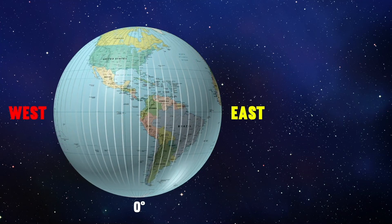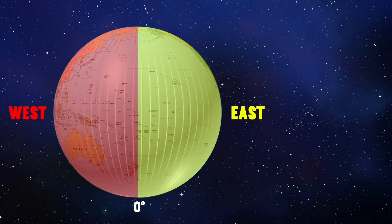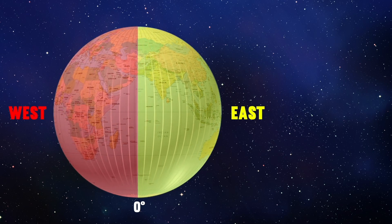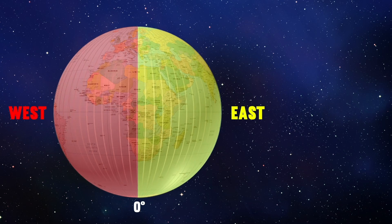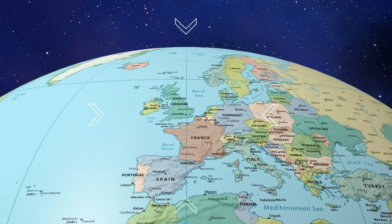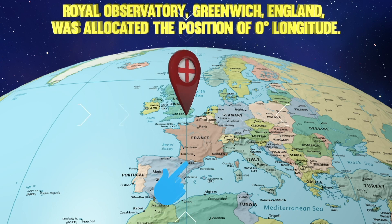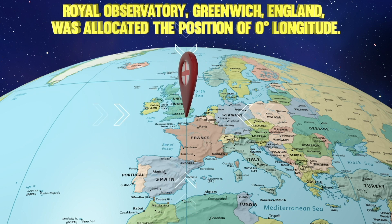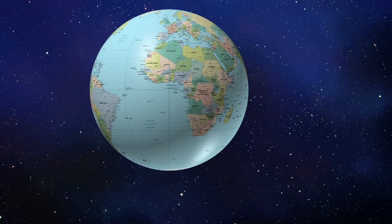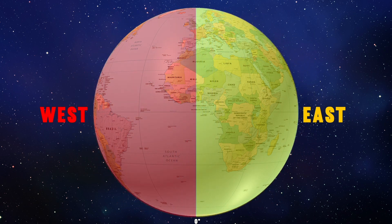Now we have to know what longitude is. Longitudes are vertical imaginary lines running from pole to pole, and longitude is a geographic coordinate that specifies the east-west position of a point on the earth's surface. Zero degree longitude is called the prime meridian, also called the Greenwich Meridian because it passes through the Royal Observatory in Greenwich, England, and was allocated the position of zero degrees longitude. The prime meridian differentiates west and east positions.